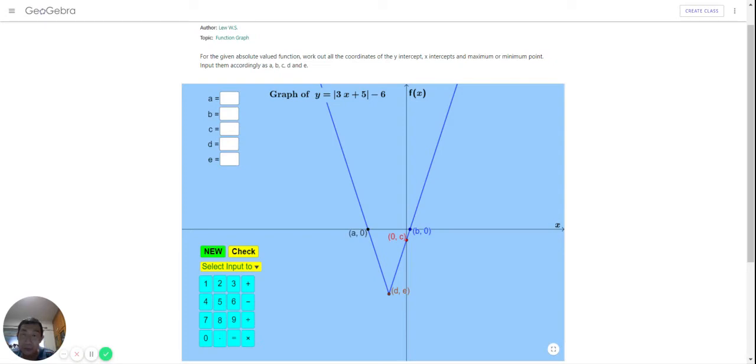A short video to explain how to use this self-review of absolute value functions and their critical points. You have y equals absolute value of 3x plus 5 minus 6. You need to know